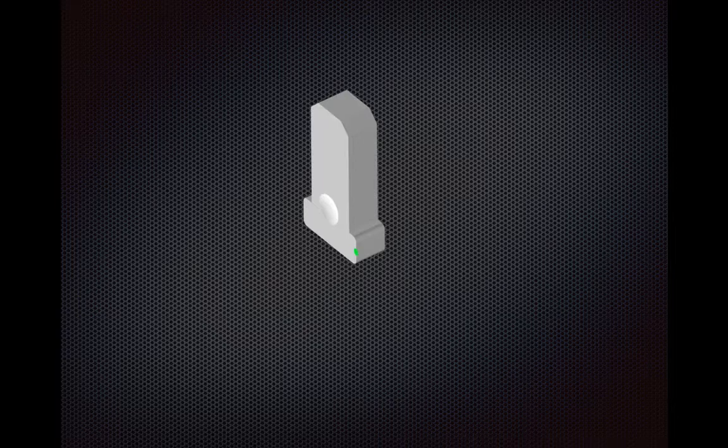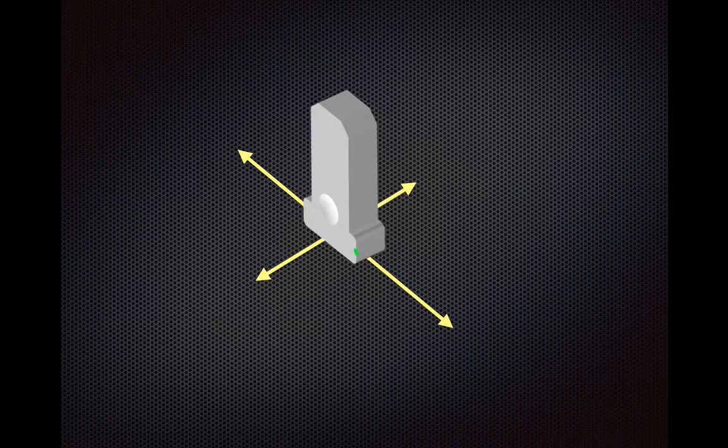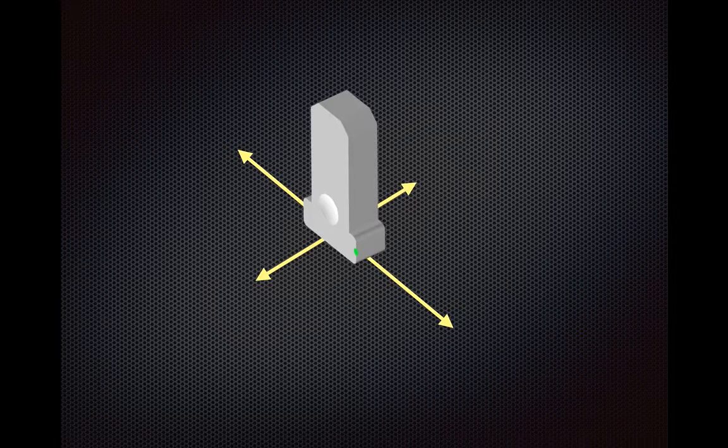When talking about probe movements, just remember that the transducer itself also has a long axis and a short axis. So sometimes the movements actually refer to the axis of the transducer.